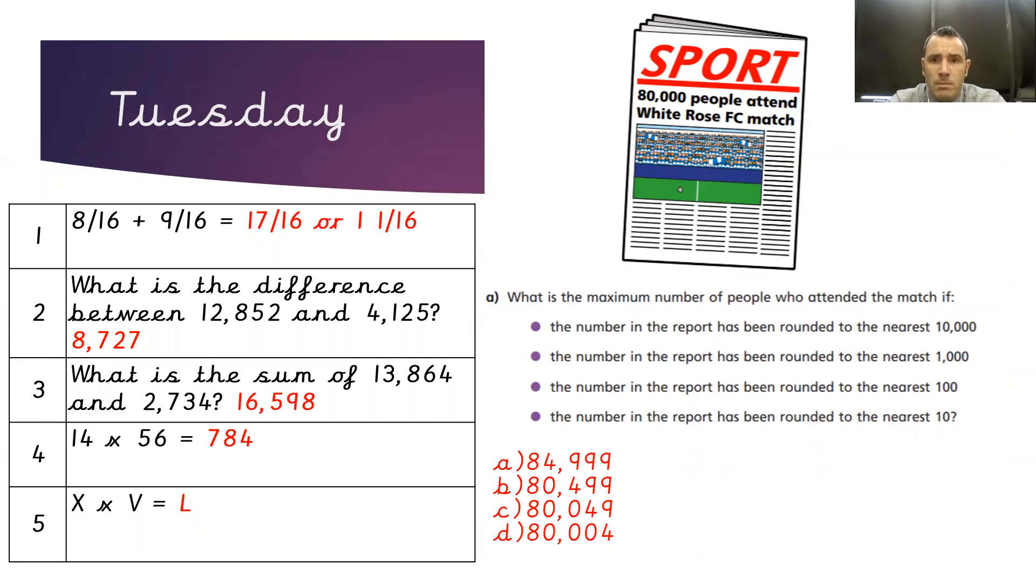Here are Tuesday's answers. To work out the number of people at the football match, the number reported has been rounded to the nearest 10,000. We know that in order to round to the nearest 10,000, we look at the next place value along, which would be thousands.